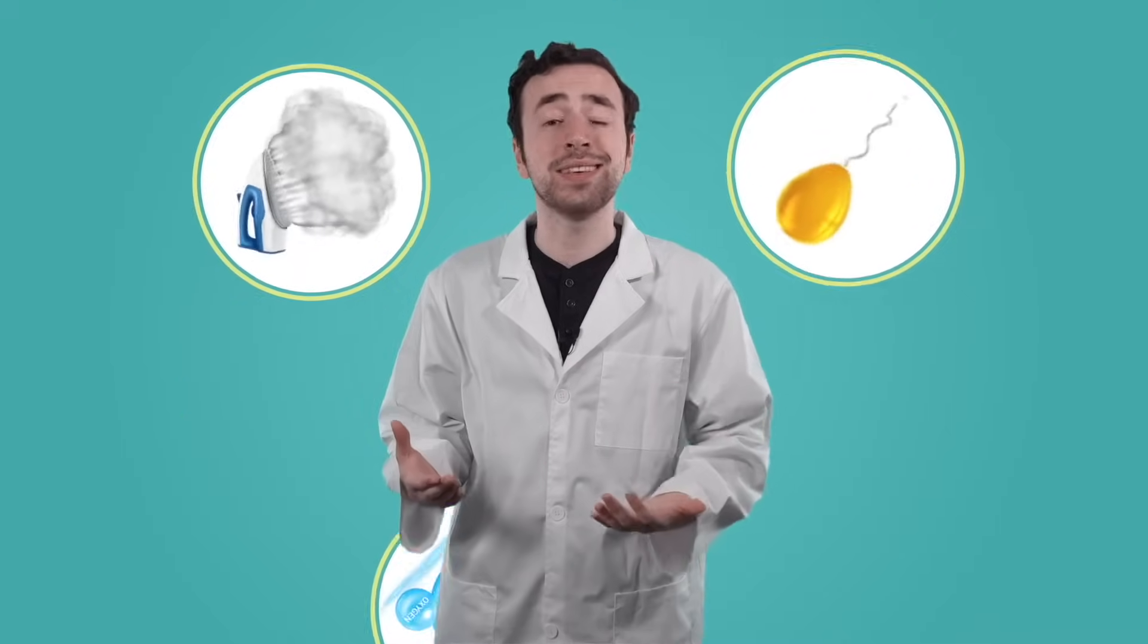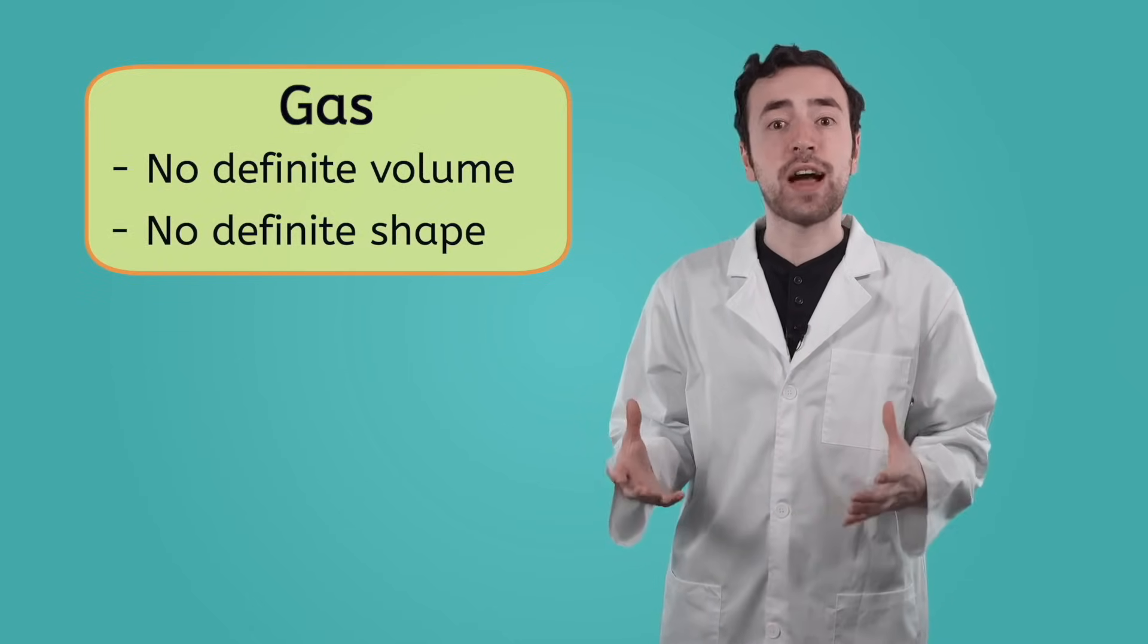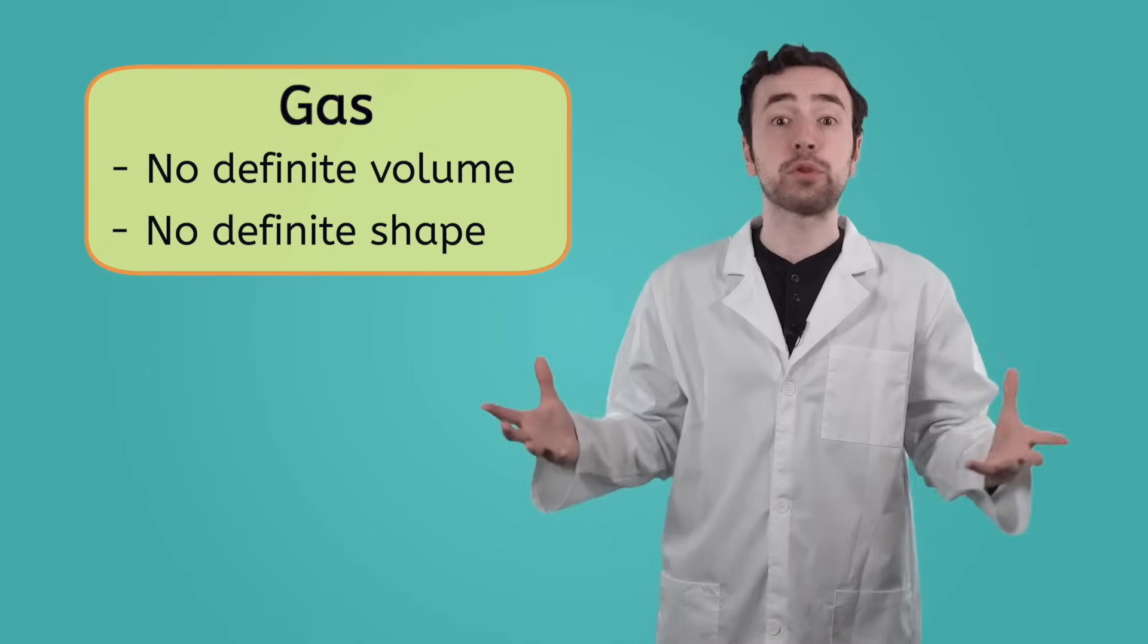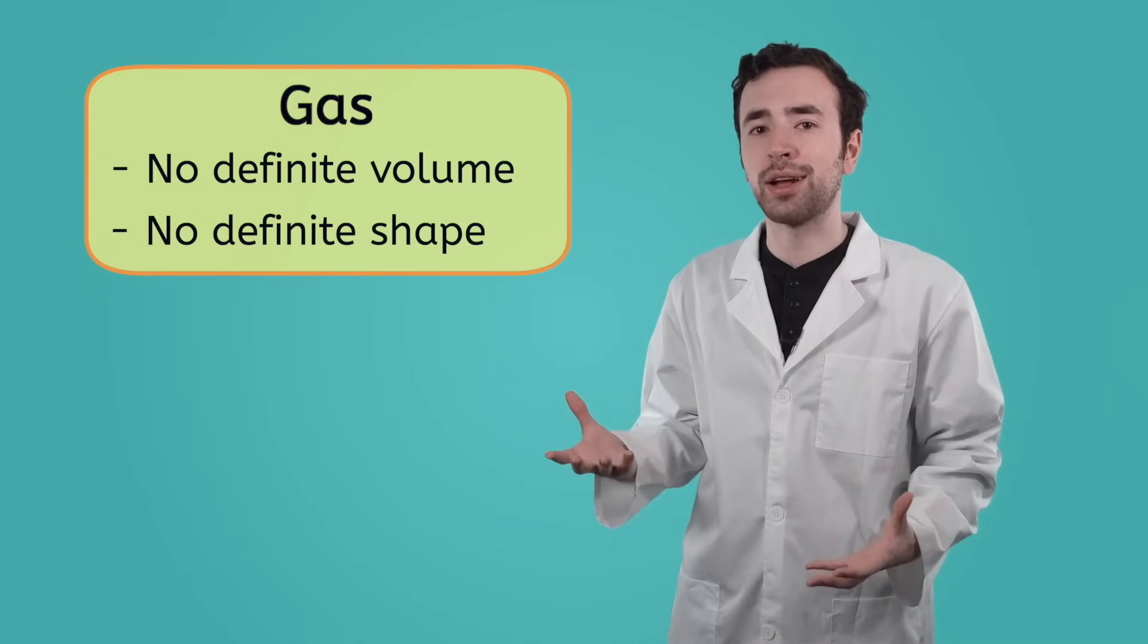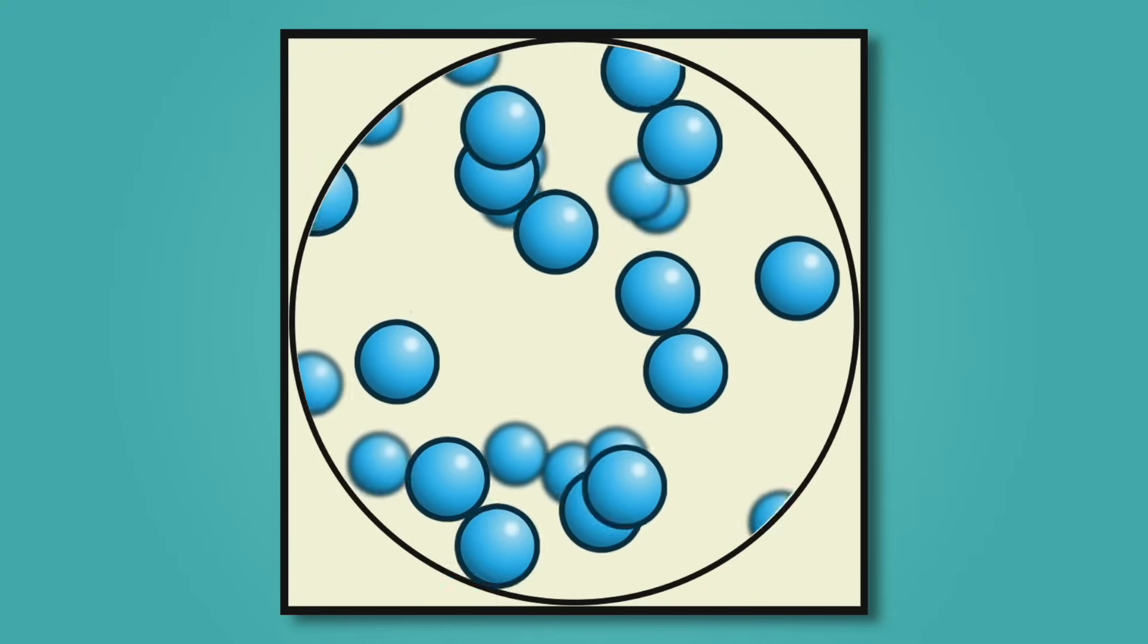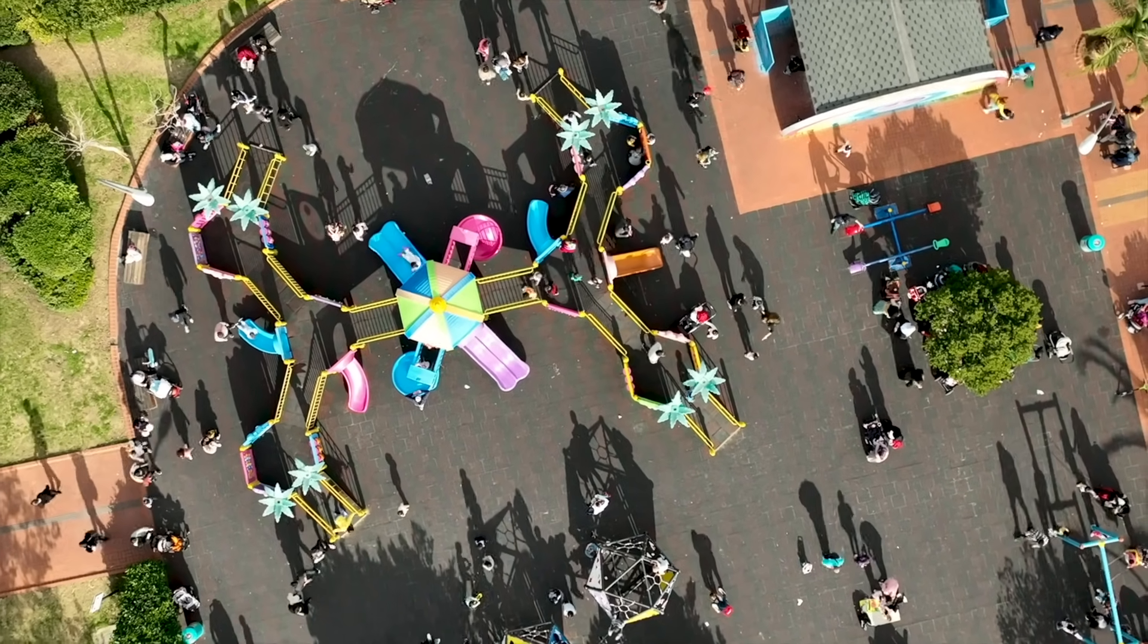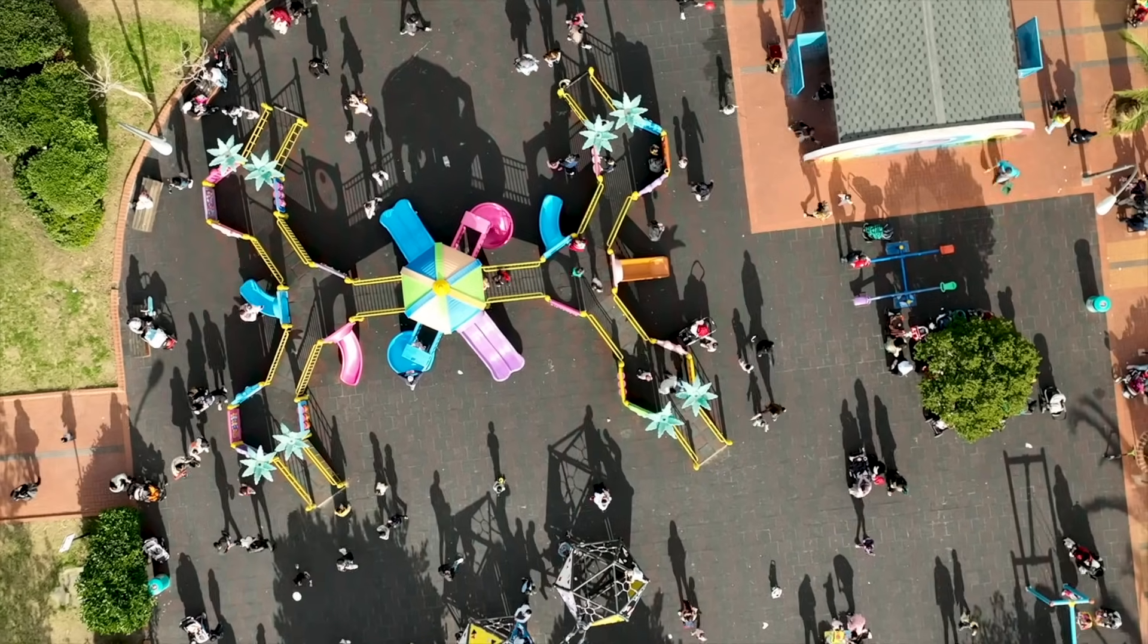Our next state of matter is gas. Gas constantly surrounds us. We use helium gas to fill up balloons, steam gas to iron out the wrinkles in our clothes, and of course, we all rely on the oxygen gas in the atmosphere to breathe. Gases have no fixed volume or shape. In fact, gases will expand into whatever space is available to them, whether that's a car's tires or an entire room. Gases behave this way because their atoms are very spread out. The atoms are moving super quickly past each other. They're kind of like kids running around a playground. They're spread out. They're moving quickly in every direction. And they might sometimes bump into each other, but that doesn't happen too often.